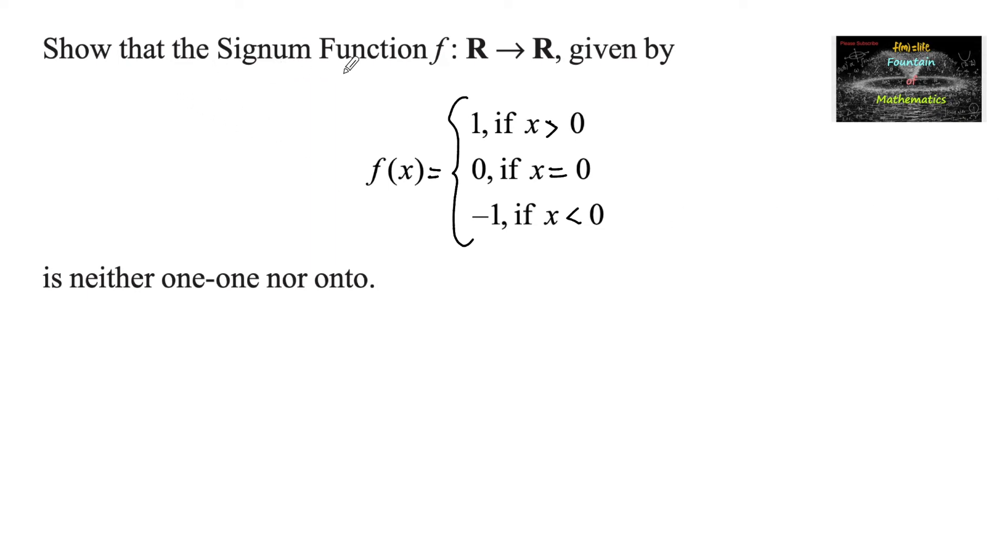Show that the signum function f from R to R given by f of x is equal to 1 if x is greater than 0, 0 if x is equal to 0, and negative 1 if x is less than 0, is neither one-one nor onto.